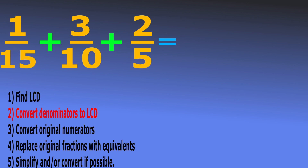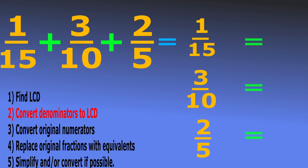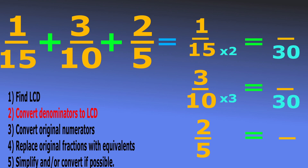Step 2: what do we multiply each denominator by to get the lowest common denominator, 30? Listing our fractions and multiplying: 15 times 2 equals 30, 10 times 3 equals 30, and 5 times 6 equals 30.